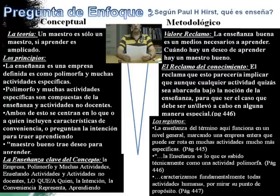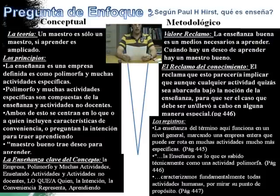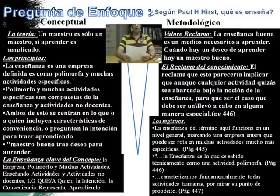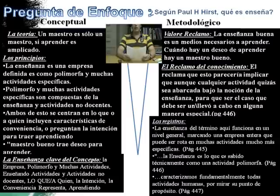La teoría de Paul H. Hurst es: un maestro es solo un maestro si aprender es aplicado. Los principios: la enseñanza es una empresa definida como un polimorfo y muchas actividades específicas. Polimorfo y muchas actividades específicas son compuestas de la enseñanza y actividades no docentes. Ambos de estos se centran en lo que, a quien incluye características de conveniencia y preguntan la intención para atraer aprendiendo. Y la última es: un maestro bueno trae deseo para aprender.